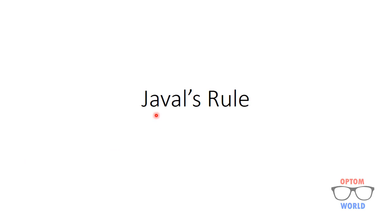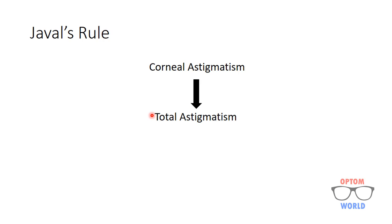In this video I will tell you about Javal's rule. Javal's rule is basically used to predict total astigmatism, or you can say spectacle astigmatism, from corneal astigmatism. As we know, total astigmatism is the sum of corneal astigmatism plus lenticular astigmatism. So in Javal's rule we basically measure corneal astigmatism and by measuring corneal astigmatism we estimate what will be the total astigmatism for that particular eye.